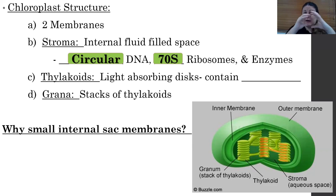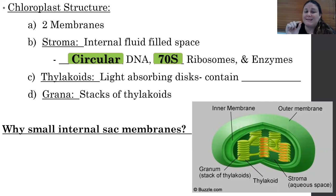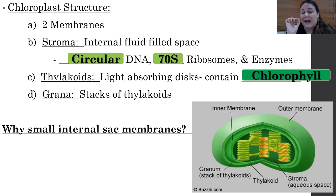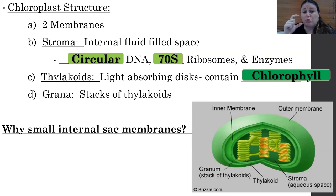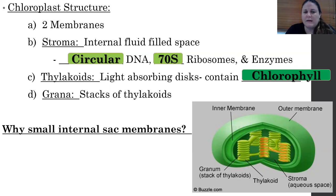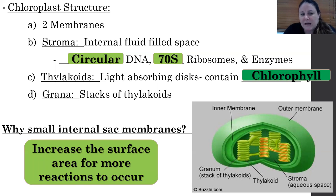Inside the inner membrane we have the stroma — the fluid containing the DNA, ribosomes, and enzymes. There are also discs known as thylakoids, which are light-absorbing discs that contain the pigment chlorophyll. A stack of those discs is known as grana. Having all these small internal discs increases surface area, giving more places for molecules to move and more reactions to occur.